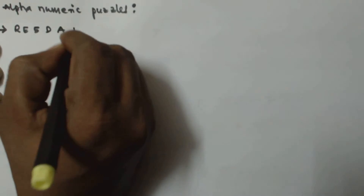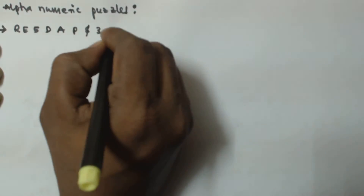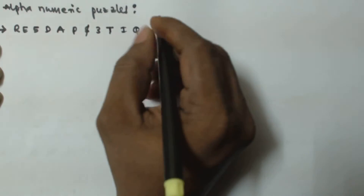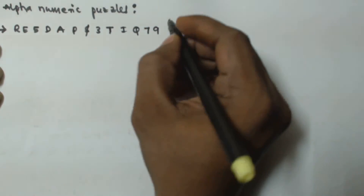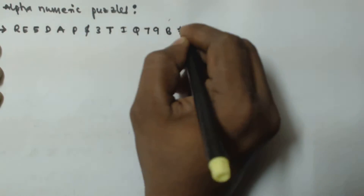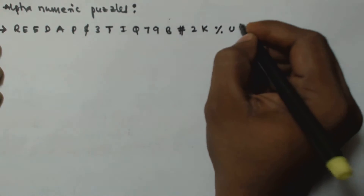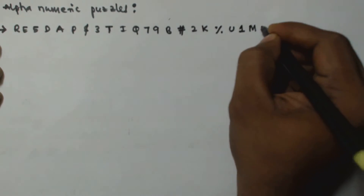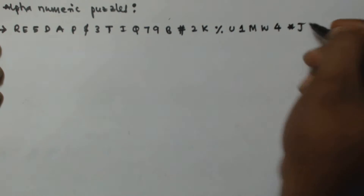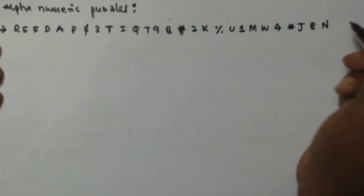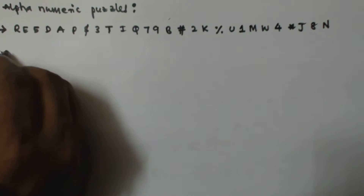Hello friends, in this video we will see another problem based on the alphanumeric sequence. Let us consider the alphanumeric sequence: r e 5 d a p $ 3 t i q 7 9 b # 2 k % u 1 m w 4 * j 8 n.